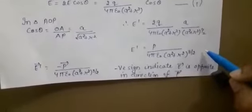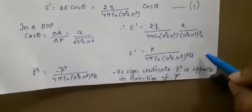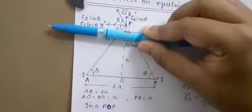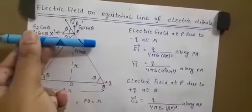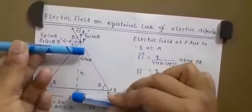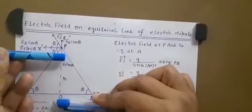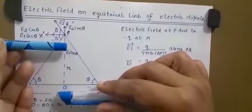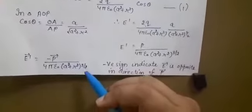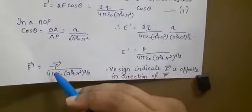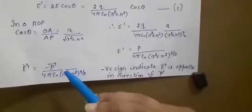Now for the direction: the net electric field is along Px′. The dipole moment p is directed from minus q to plus q — in the positive x direction — while the net electric field is in the opposite direction. So the angle between them is 180°. To depict this in the formula, E′ is written as minus p vector upon 4πε₀(a² + r²)^(3/2), where the negative sign indicates that electric field E and dipole moment p are in opposite directions.